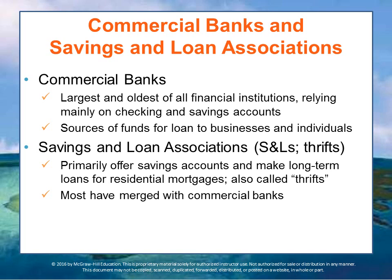Savings and loans, on the other hand — S&Ls, often called thrifts — are financial institutions that primarily offer savings accounts and make long-term loans for residential mortgages. A mortgage is a loan made so that a business or individual can purchase real estate, typically a home. The real estate itself is pledged as a guarantee called collateral that the buyer will repay the loan. If the loan is not repaid, the savings and loan has the right to repossess or take ownership of that property.